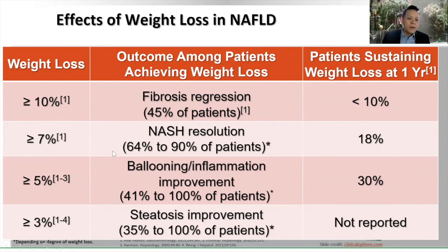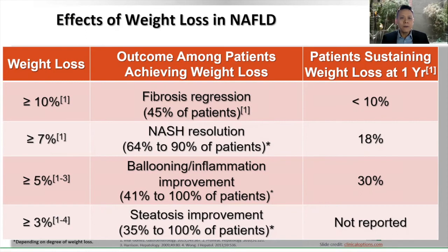With 3% weight loss, there is steatosis improvement in 30% to 100% of patients. With 5% weight loss, there is already improvement in inflammation. With 7% weight loss, NASH resolution occurs — the steatohepatitis totally resolves — which is excellent because it also leads to fibrosis regression later on. With more than 10% weight loss, there is fibrosis regression in about half of patients.